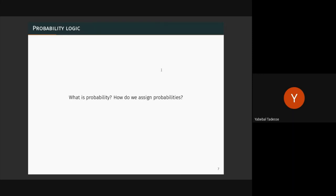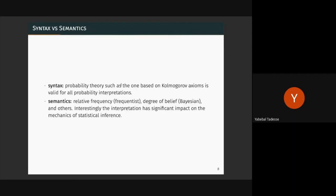One of the most important questions is: what is probability and how do we assign it? When you think of probability, you must think of two things: syntax and semantics. The syntax — the mathematics — allows you to write and calculate probabilities. There are multiple ways of interpreting the same variable. The interpretation of probability is what we sometimes debate: there are two major types — frequentist and Bayesian.